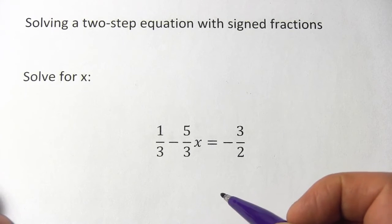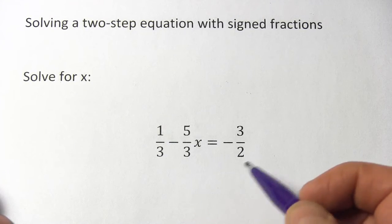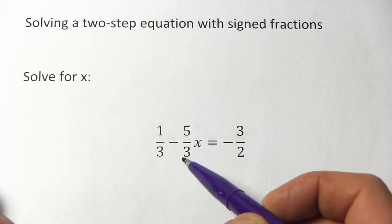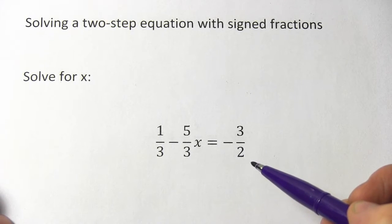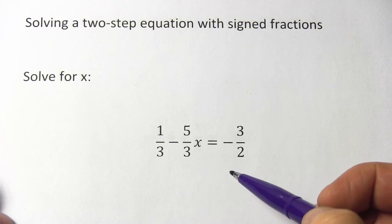Here we have an equation to solve for x and there are fractions everywhere. Every single term is a fraction and they don't all have the same denominator. So what are we going to do to solve this one?